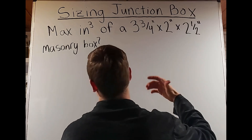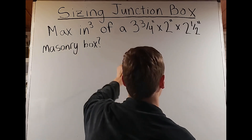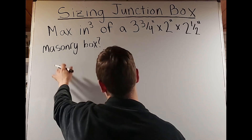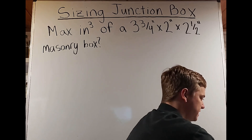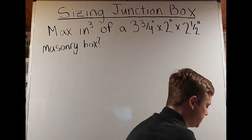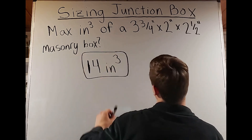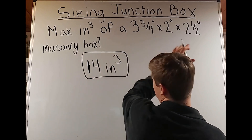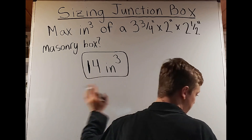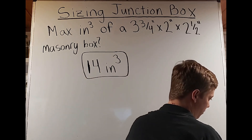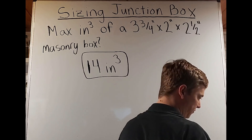Now switching it up: we're looking for the maximum cubic inches of a three-and-three-quarter by two by two-and-a-half inch masonry box. We find that under the masonry box/gang section, and it states a minimum volume of 14 cubic inches. Interestingly, this is actually the maximum amount of space available in this box. So remember — if they ask for the maximum volume of a box, in Table 314.16A you'll be looking under the minimum volume column. Don't let that fool you.